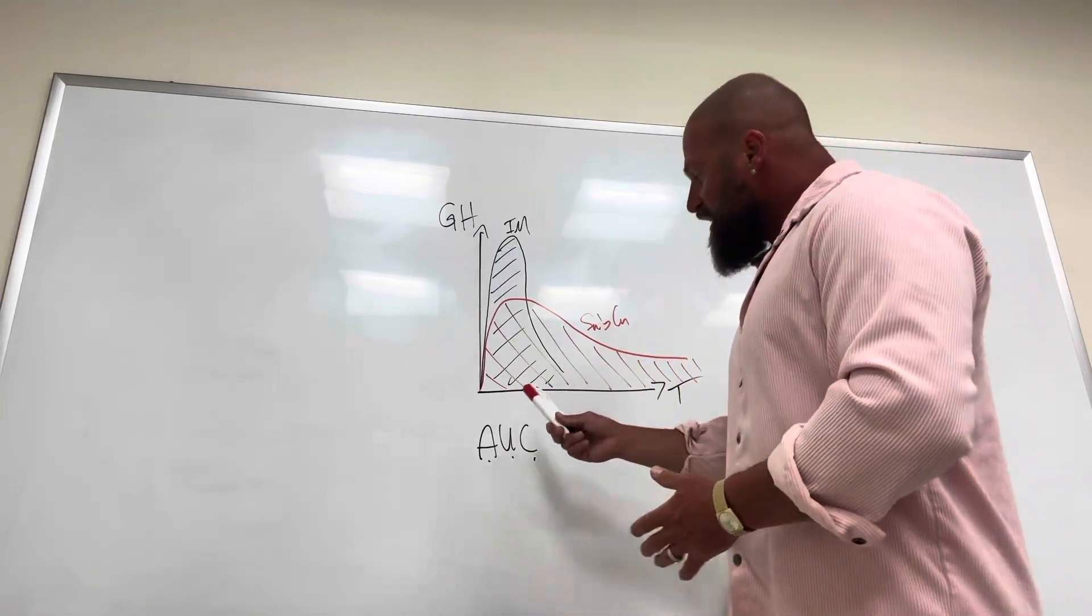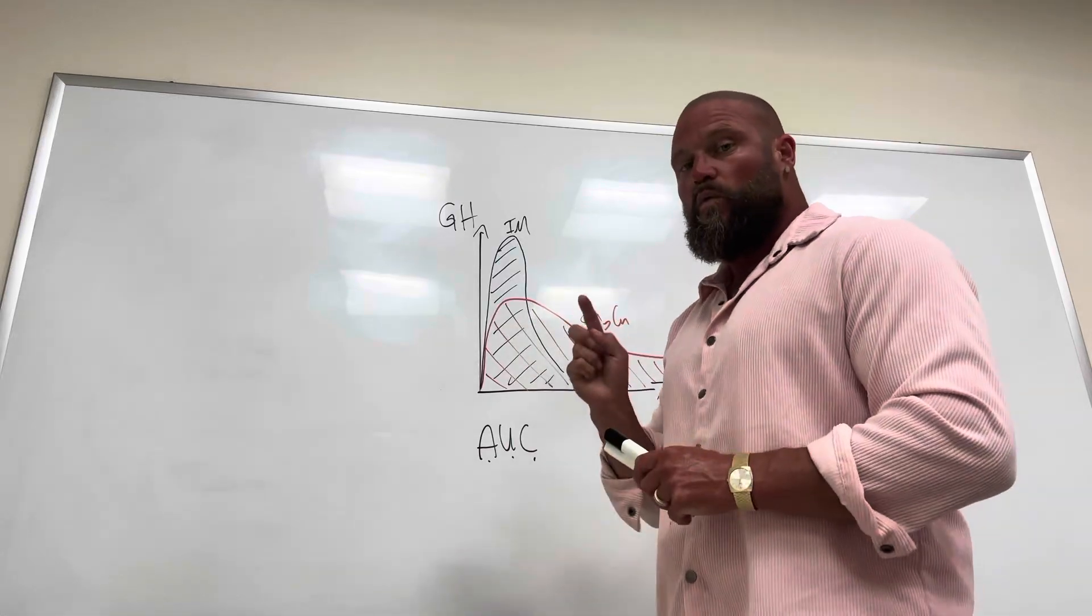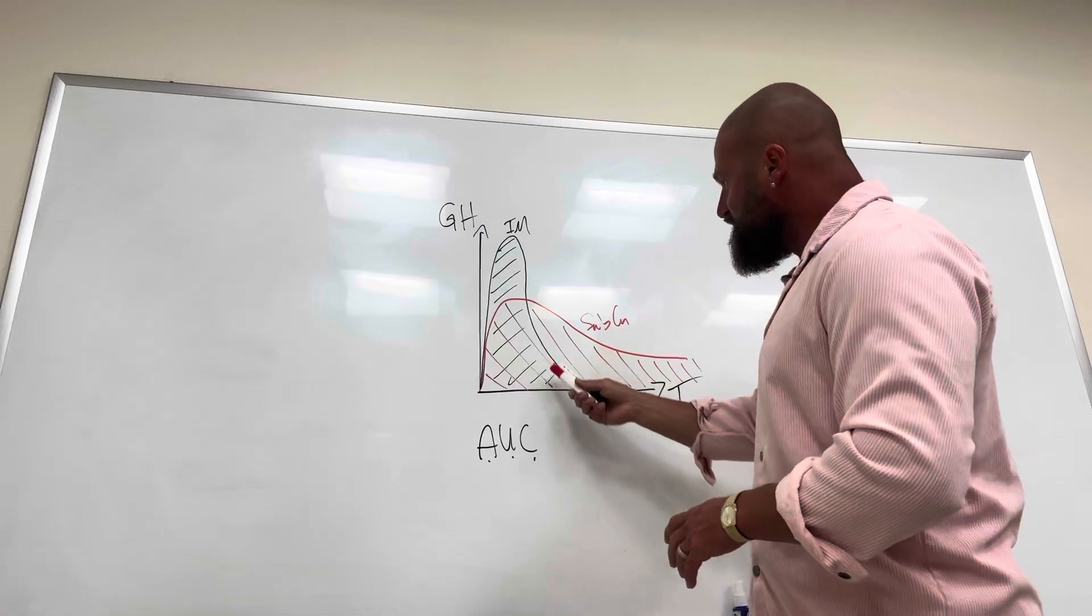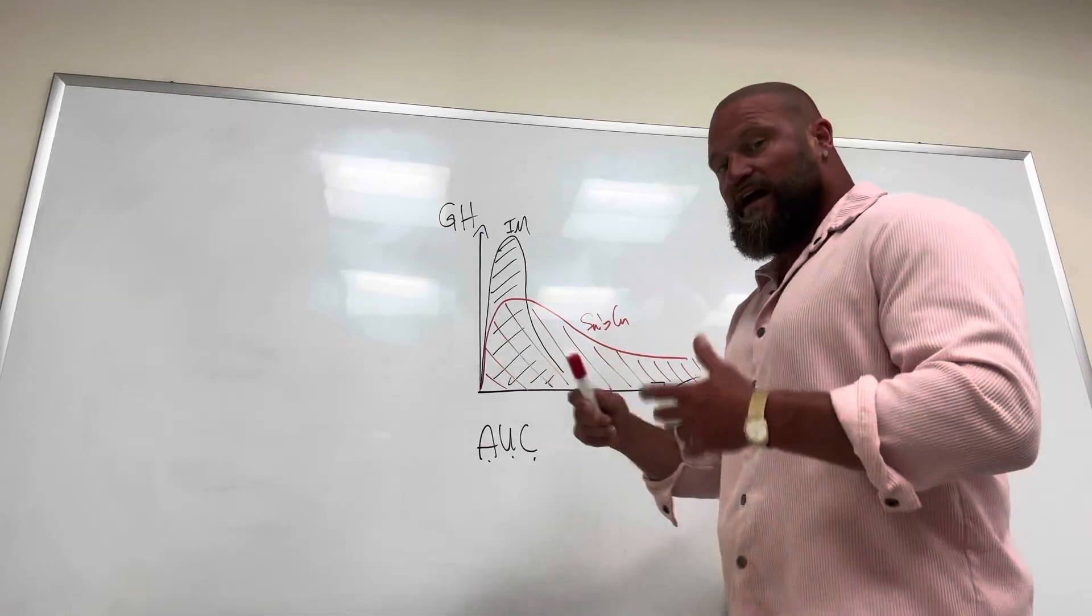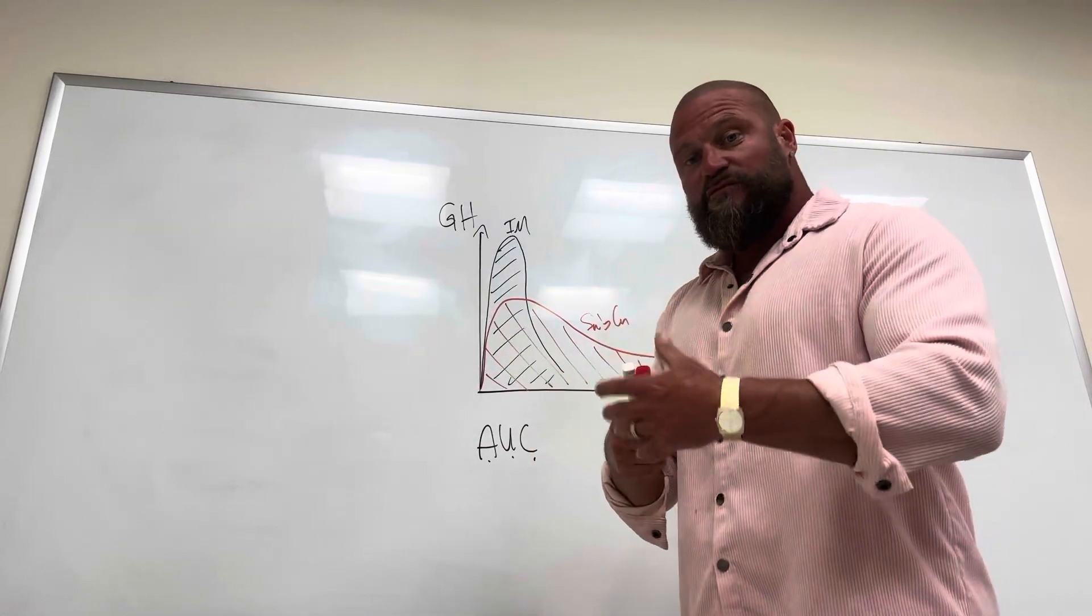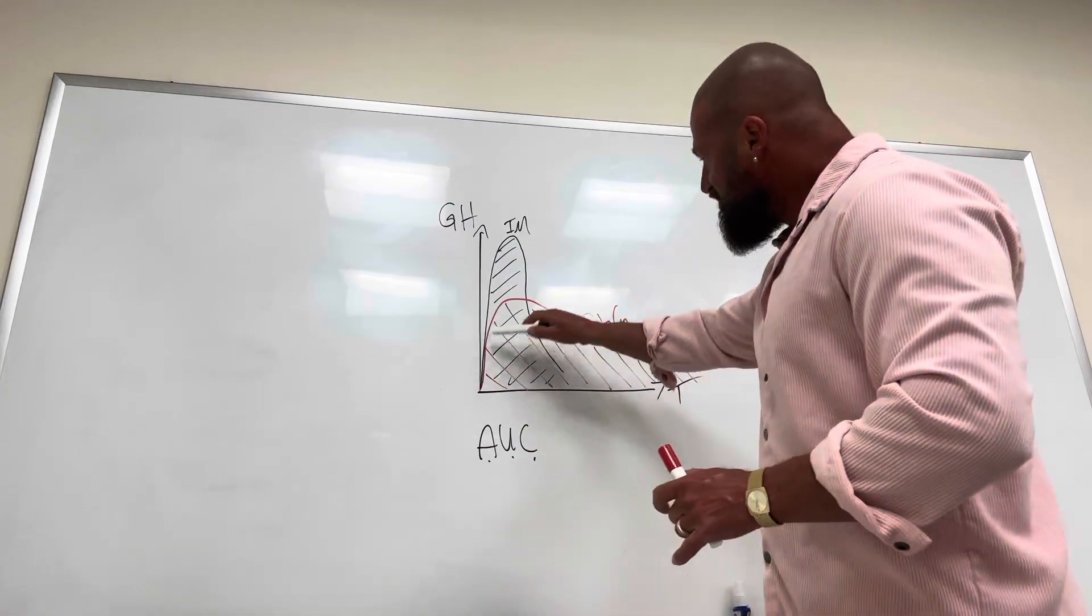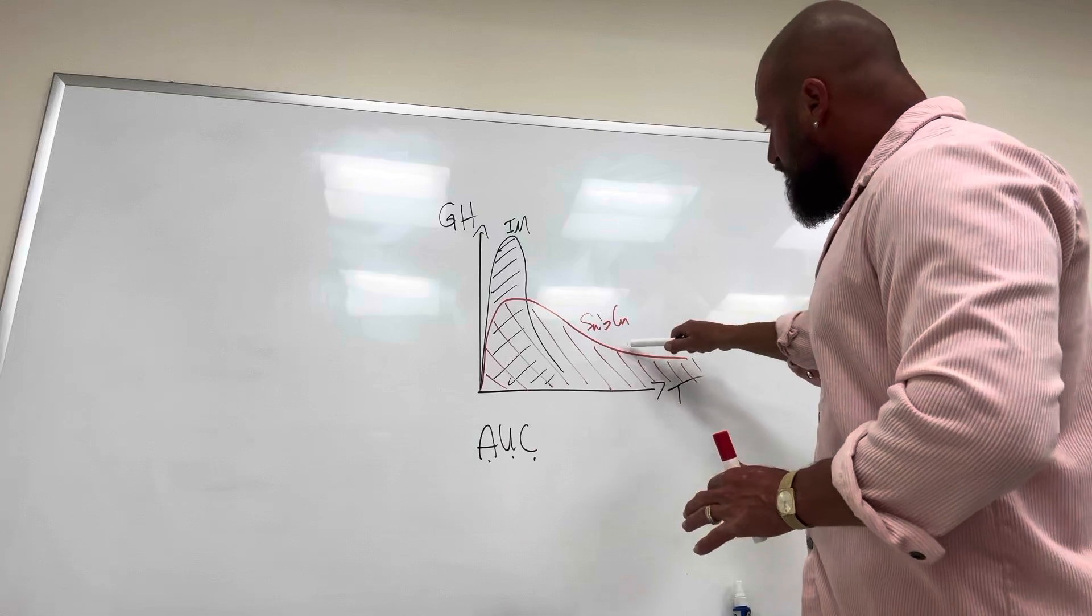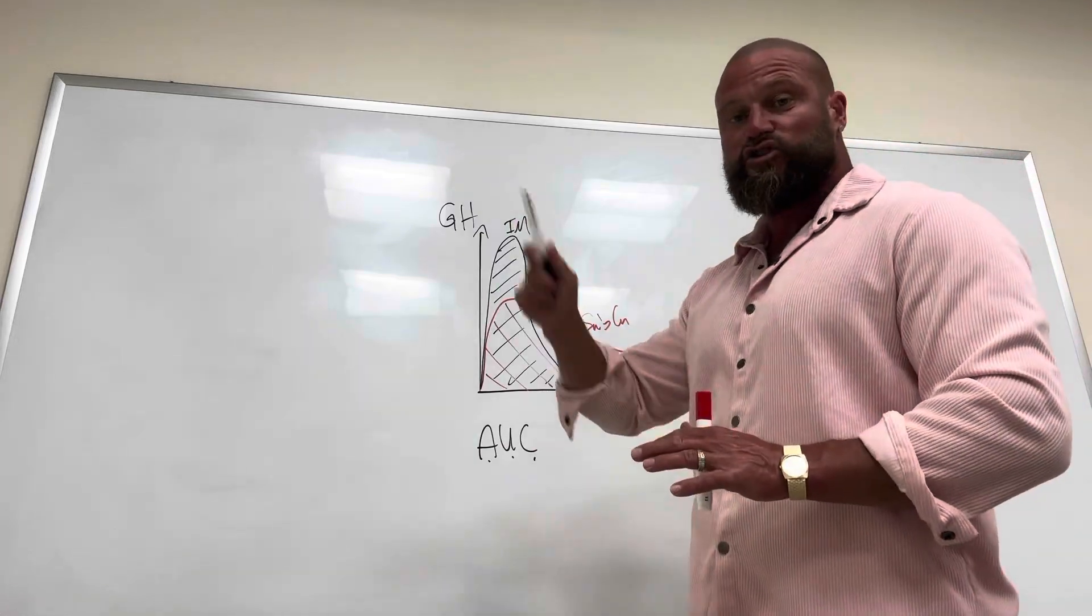So if you inject intramuscularly, you will get one short peak of IGF-1, but it will go down very fast. If you inject GH subcutaneously, IGF-1 as well will be steadily released for a prolonged period of time instead of having a short peak.